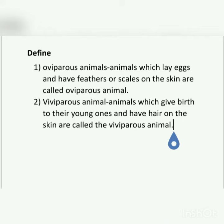The very first is oviparous animals. Animals which lay eggs and have feathers or scales on skin are called oviparous animals.